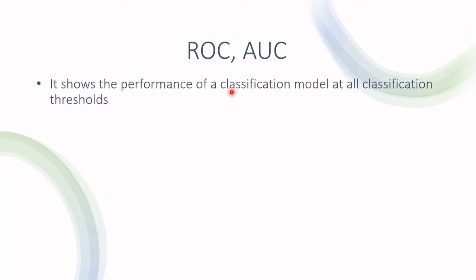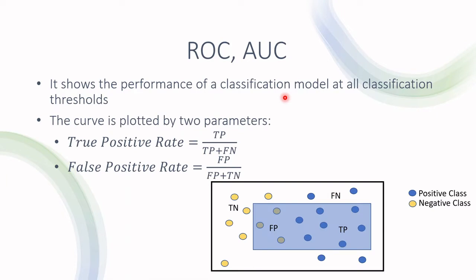Okay, so the ROC curve, what it does is that it plots many thresholds for a given classification model. So we have a certain classification model that has to predict, let's say, zero or one. And what it does is that it predicts probabilities. And then for every threshold for these probabilities, two parameters are calculated.